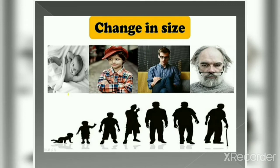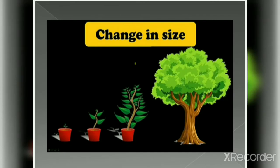First is change in size. All of us are born as a small baby. Then our body grows, our weight increases, our height increases, and after passing all the stages of life, we finally reach old age. During our entire life, our hair and nails keep on growing. This is change in size. Similarly, it happens with plants and animals also. From a small seed which we sow in soil, a plant turns into a huge tree.